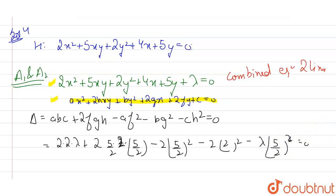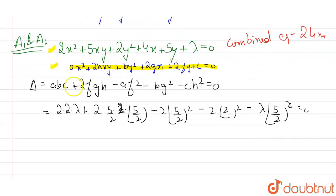So now, if I simplify this equation, I can easily find out the value of what? Lambda, right? So this will become what? This equation will become 4 lambda plus 25 minus 25 by 2 minus of 8 and then minus of 25 by 4 lambda equals to 0.